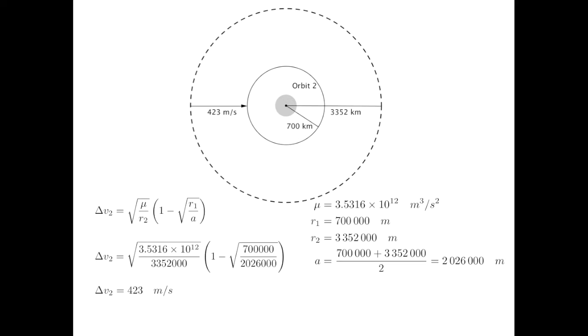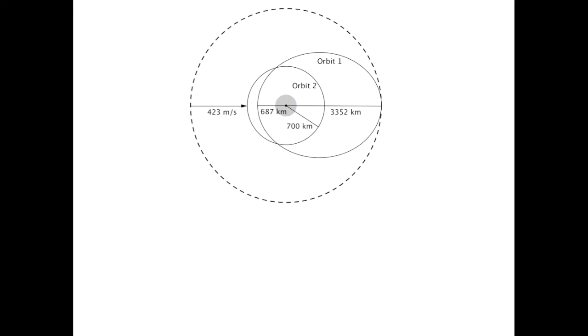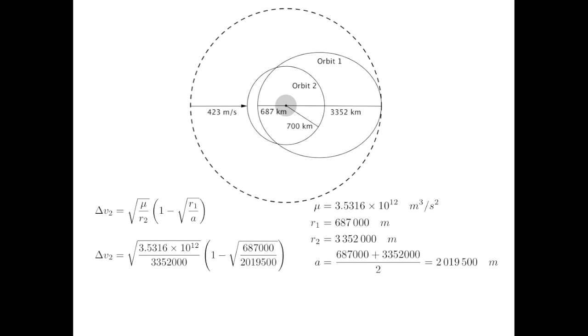Of course, we didn't start with a circular orbit. We started with this orbit. Let's now calculate the delta v requirement for lowering our periapsis from our hypothetical circular orbit to the periapsis of our actual orbit. We use the exact same formula. In fact, the only thing that changes is the value of R1, which is now 687,000 meters. Plugging in and pushing this through a calculator gets 428 meters per second.